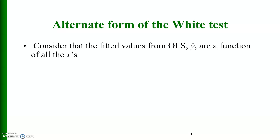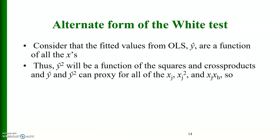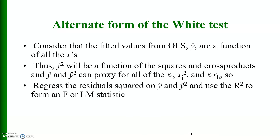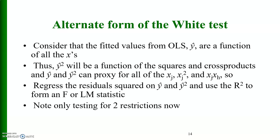An alternate form of the White test: consider that the fitted values of OLS, y-hat, are a function of all the x's. Thus y-hat squared will be a function of the squares and cross-products, so y-hat and y-hat squared can proxy for all of the x_j, x_j squared, and x_j times x_h. So regress the residuals squared on y-hat and y-hat squared, and use the R-squared to form an F or LM statistic. Note we are only testing for two restrictions now.